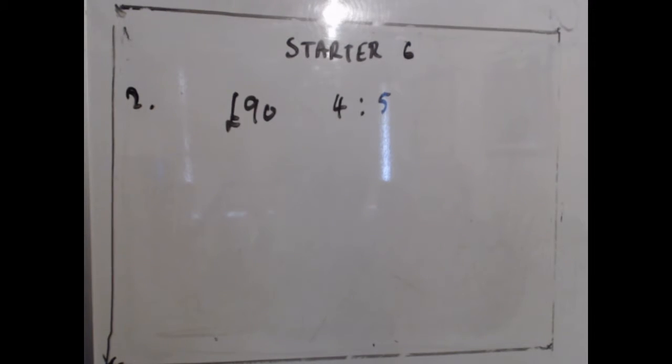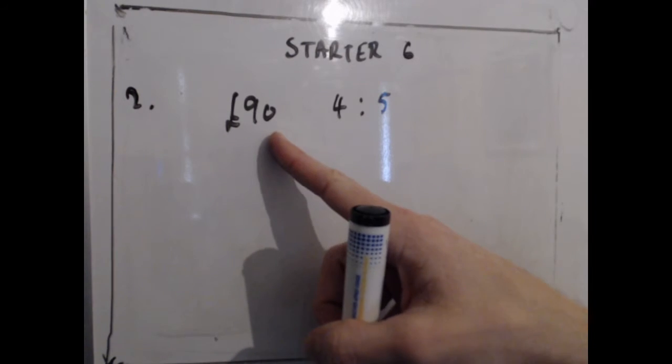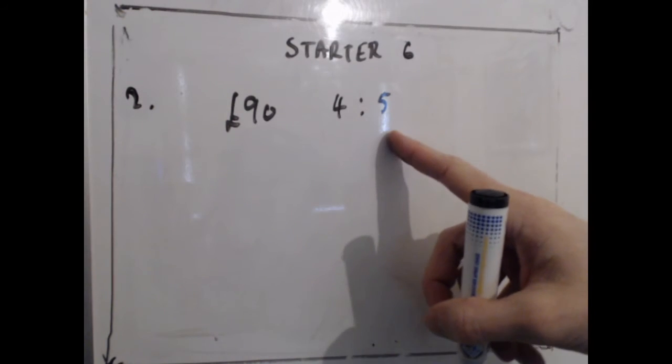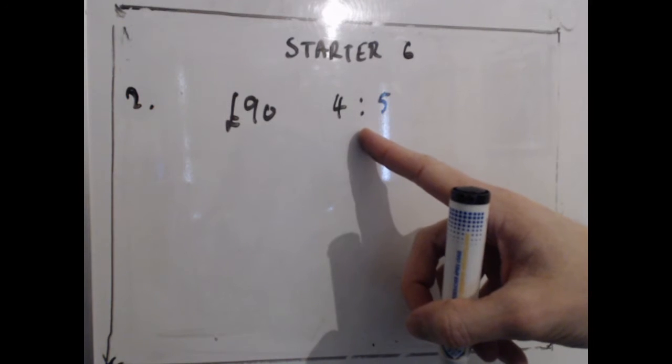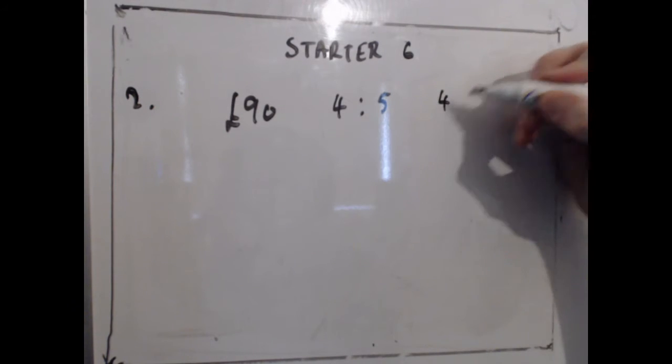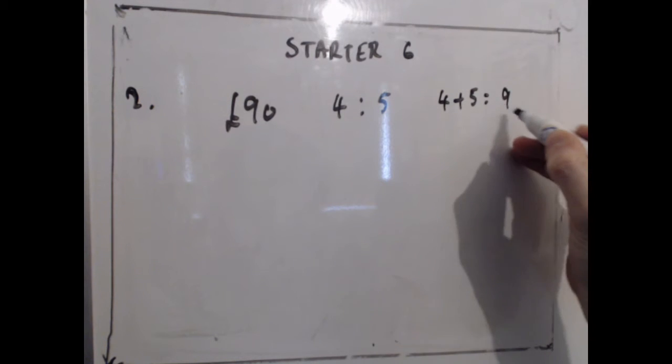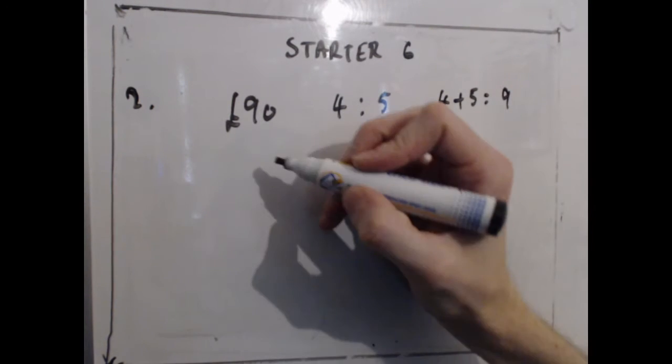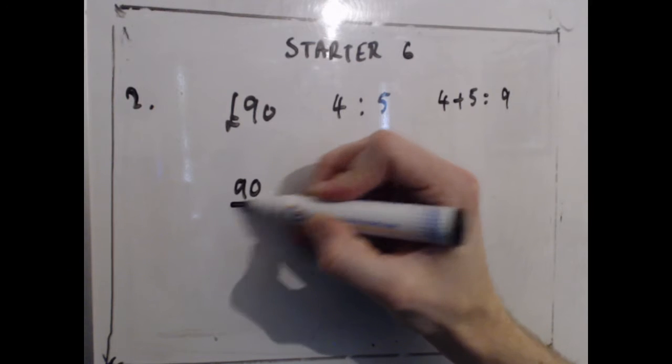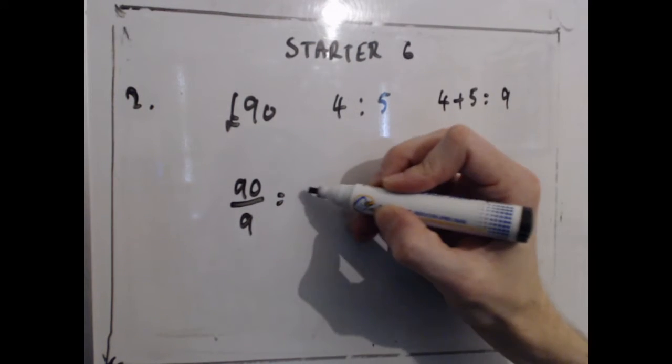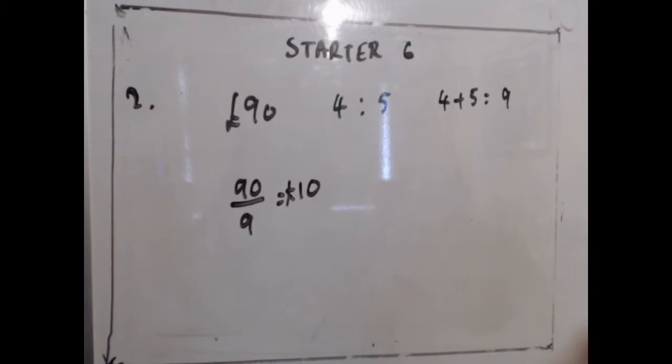Second question, only two bits of information that are important: £90 in the ratio of 4 to 5. The first thing I'm going to do is add up my ratio parts, 4 plus 5 is 9, then I'm going to see if I've got 9 parts, what's one part of my ratio worth, so I'm going to do £90 divided by 9, which gives me £10 for each part.